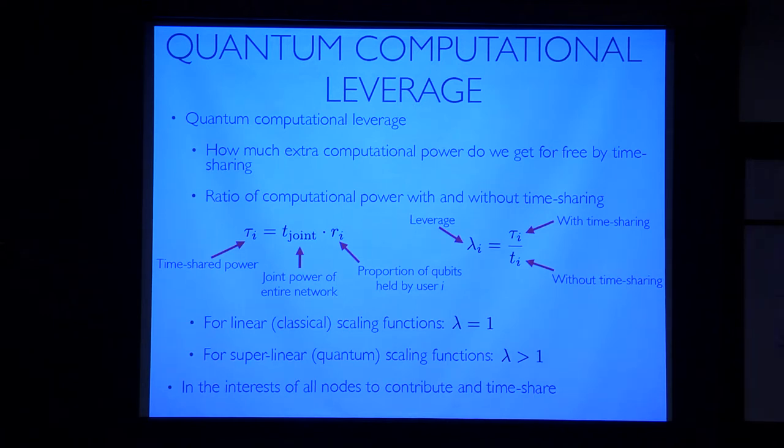So let's go into that a little bit further. I'm going to introduce this notion called the computational leverage, which is how much extra computational power do you get by doing this idea of contributing your resources to the network, making a big virtual computer, and then timesharing the resources between you. So I'm going to call τ_i the timeshared computational power, which is the joint computational power of the entire network, all the quantum computers combined into one, times whatever proportion of the qubits you own. So that's an equitable way of sharing it. And I'm going to call the leverage the ratio of the computational power with and without timesharing.